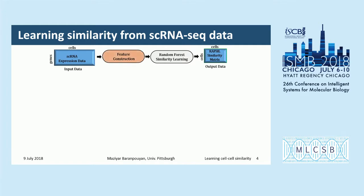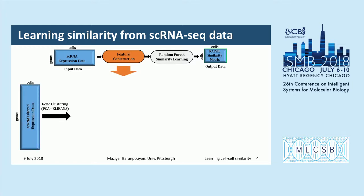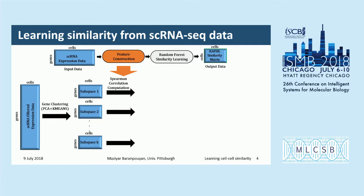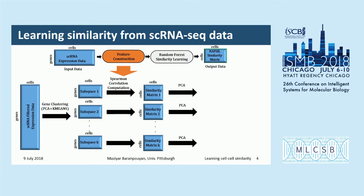In the first step, feature construction, we extract features from the input data. First, we perform gene clustering by combining PCA and k-means clustering, which automatically divides gene expression data into multiple gene clusters — subspaces of the data. Spearman correlation computation is then applied on each gene cluster, providing cell-to-cell similarity metrics extracted from each subspace. Principal component analysis is applied again on each similarity matrix, and we select the most informative principal components using the elbow method.